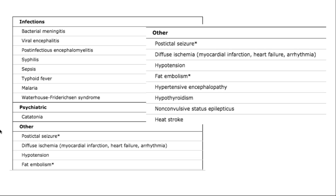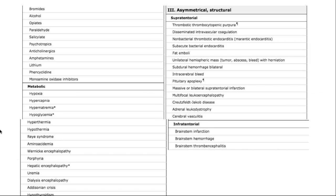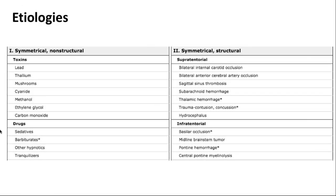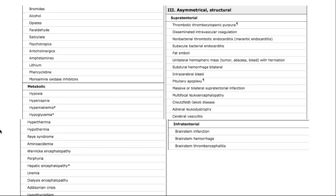When it comes to structural causes, we subclassify them as symmetrical versus asymmetrical, and relative to the tentorium — supratentorial versus infratentorial. As mentioned, you need involvement of at least one cerebral hemisphere with the RAS to cause altered consciousness leading to coma. Conditions can vary from a hemorrhagic or ischemic stroke with significant cytotoxic edema, to a tumor with secondary bleed.